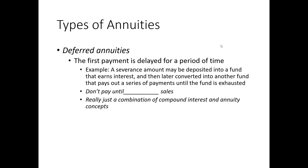Deferred annuities: sometimes you do not pay until some later period, and then you pay regular intervals of equal amounts — so it becomes an annuity, but there's a deferral period before the annuity begins. It's just a combination of compound interest and annuity calculations — nothing really super complicated.